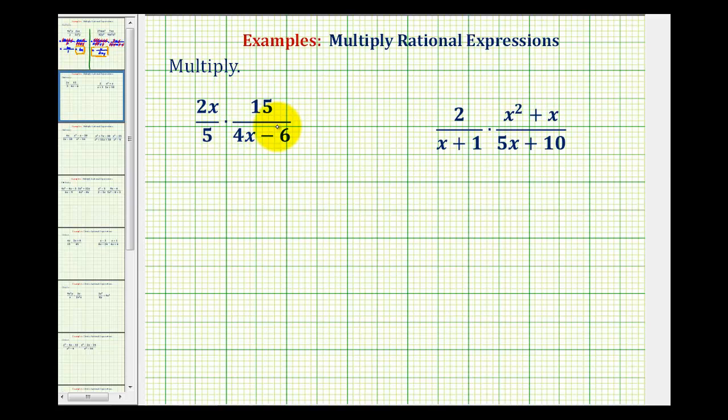To do this, we're going to write every numerator and denominator in factored form. Looking at our first example, we cannot simplify this 2x and this 4x because we cannot simplify across addition or subtraction. And this is one of the main reasons why, in the previous example, when the numerators and denominators were monomials, I still wrote them out in prime factored form.